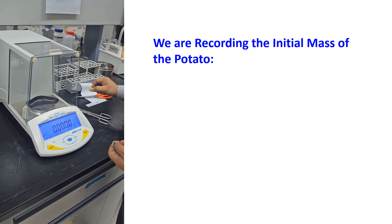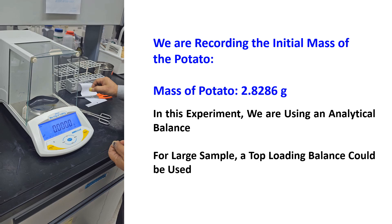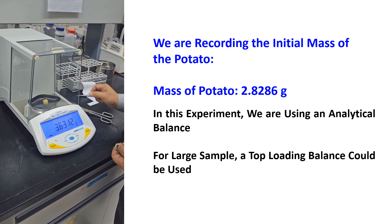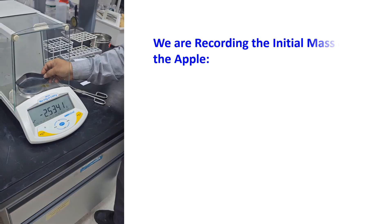We are recording the initial mass of the potato. Mass of potato in air is 2.8286 grams. In this experiment we are using an analytical balance. For large samples, a top-loading balance could be used. We are recording the initial mass of the apple. Mass of apple in air is 2.1402 grams.